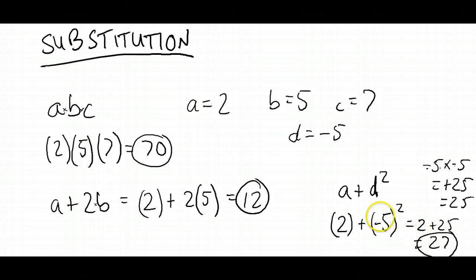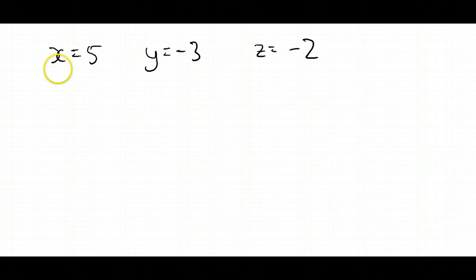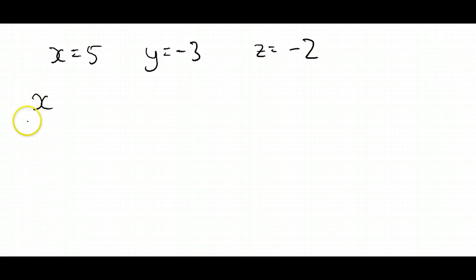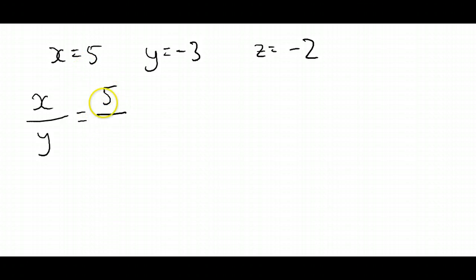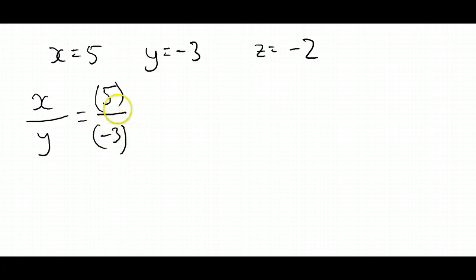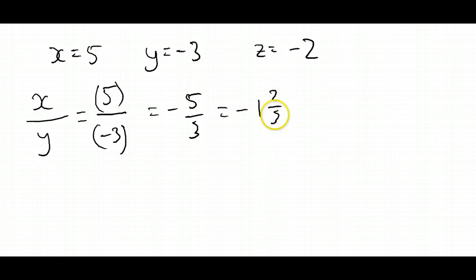Let's do a couple more, just so we know we've got it down pat. Let's say these are the values given to us: x equals 5, y equals negative 3, and z equals negative 2. Let's say we've got x divided by y. All we've got to do is wherever we've got x, put 5 in there. And for y, we replace it with negative 3. 5 divided by negative 3 is negative 5 over 3, or you can write it as negative 1 and 2 thirds.